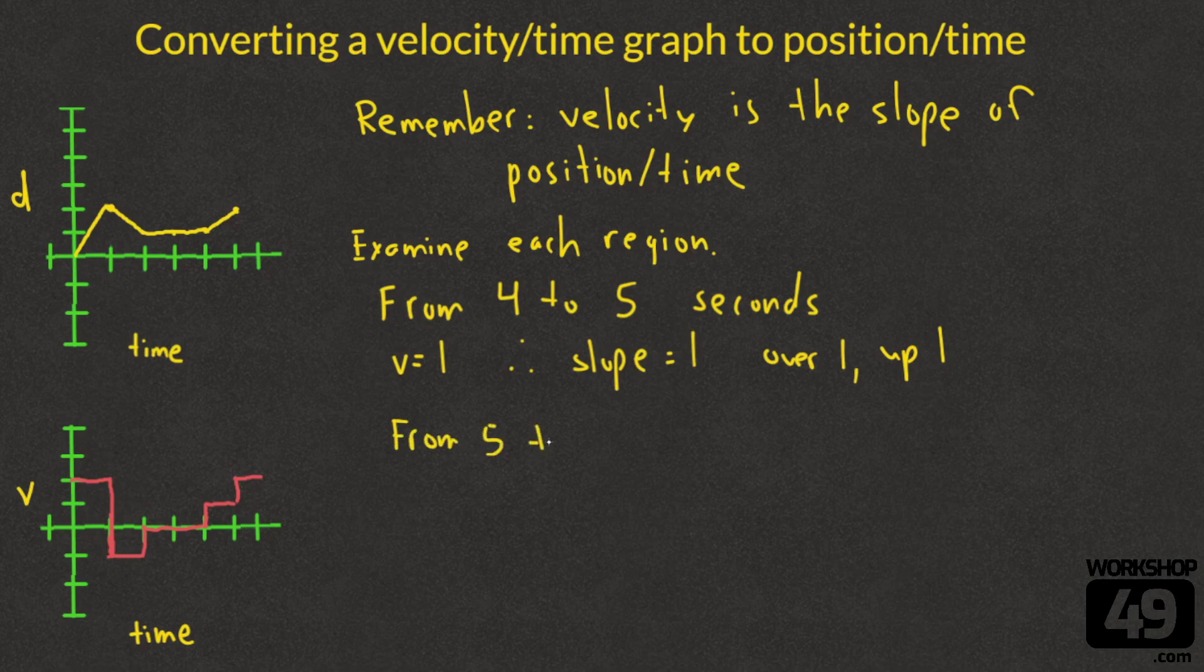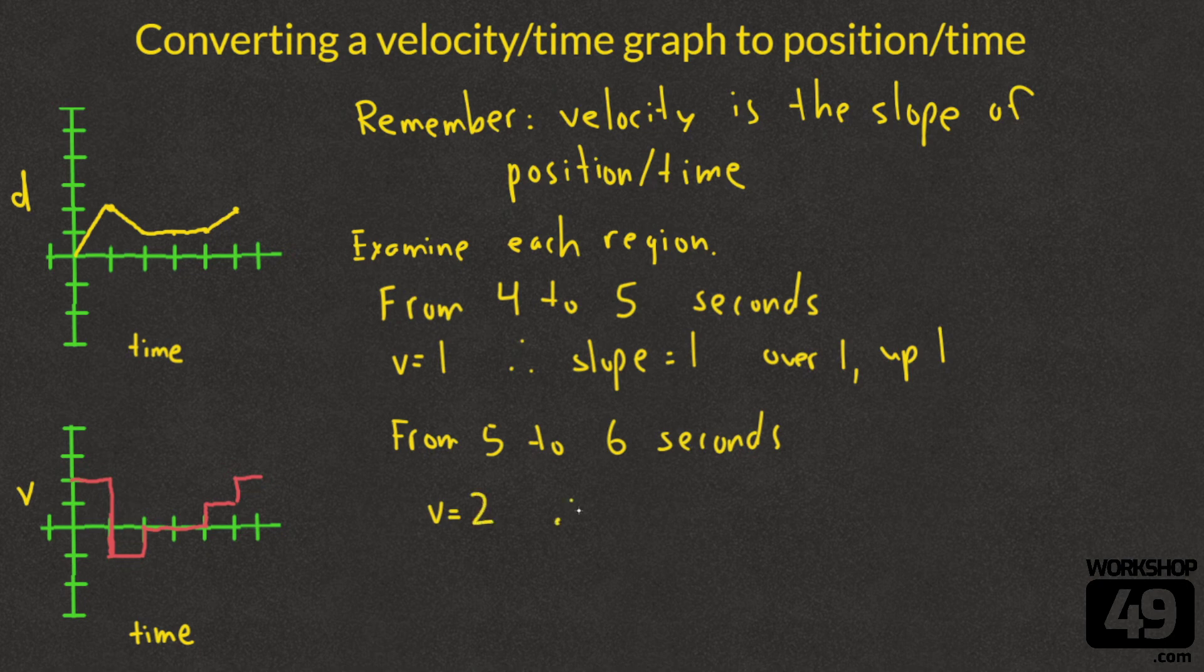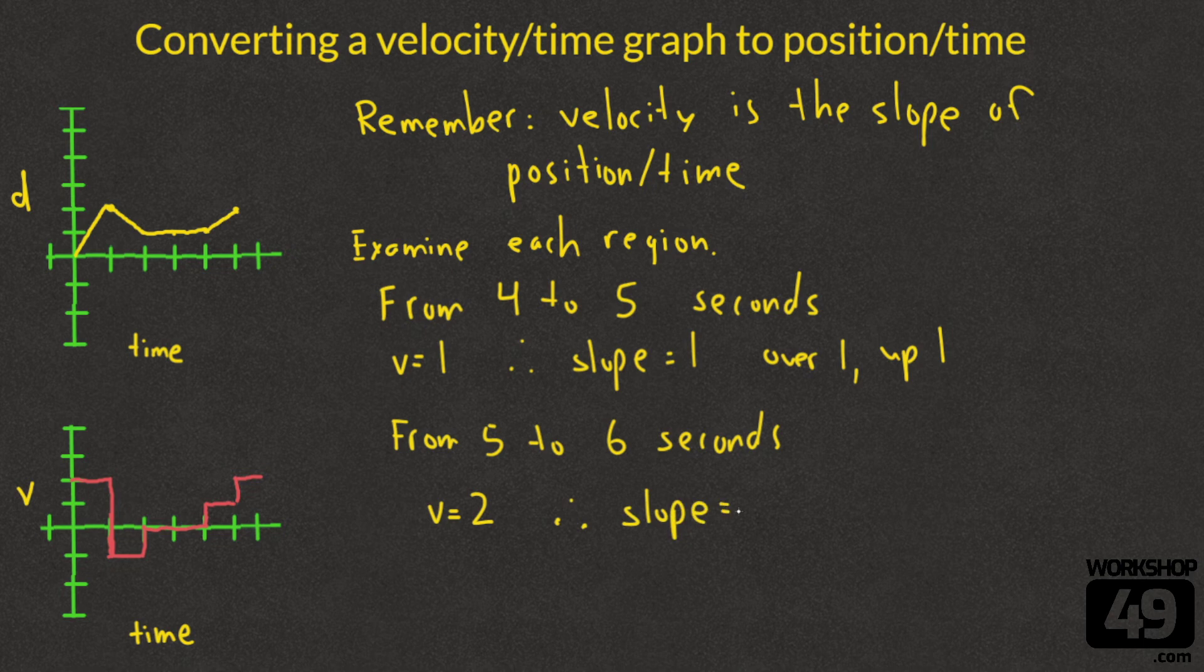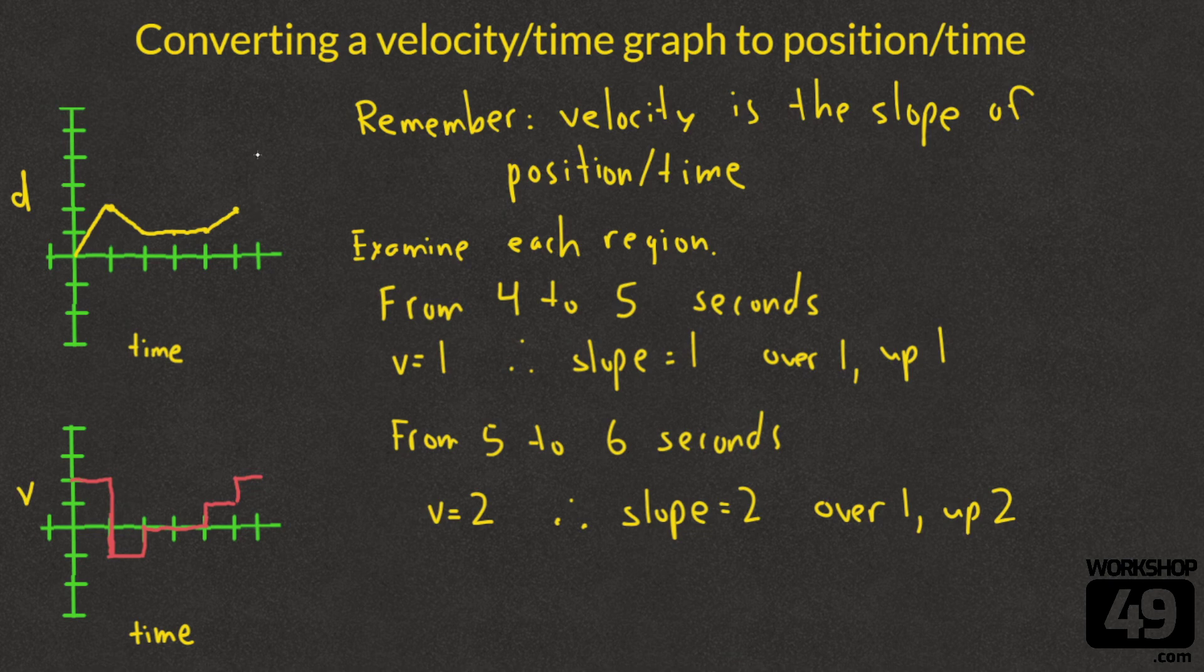Final region. For the region that goes from 5 to 6 seconds, we look at our velocity time graph. We see that it's at a height of 2. Velocity is 2. Therefore, on our position time graph, it also has to have a slope of 2. We're going to go over 1, up 2. We go over 1, up 1, 2, paint a little dot, and connect them.